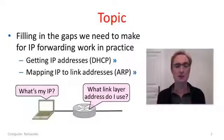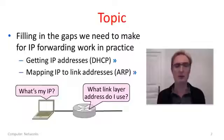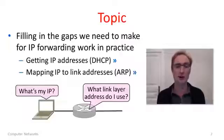Both DHCP and ARP are pretty good examples of the real-world glue you would need to make designs work. They're very necessary for IP to work in practice. DHCP provides a little bit of IT support, whereas ARP provides a bit of glue between the layers to join the network layer to the link layer.